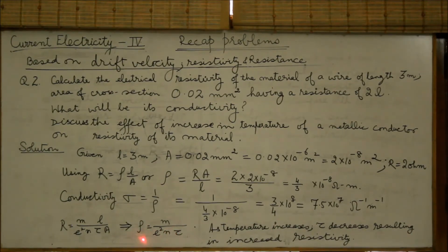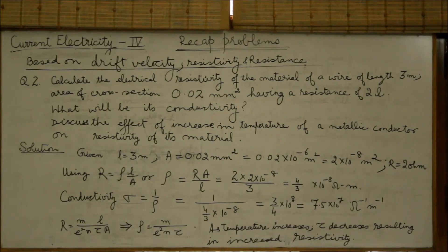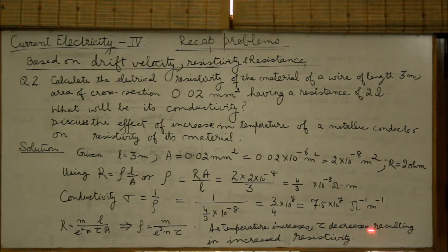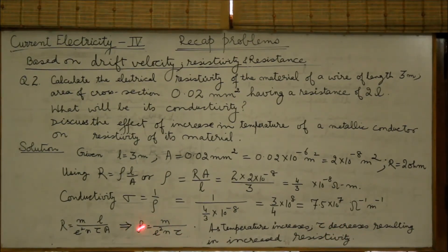The factor affecting rho is tau, the relaxation time, or the average time between two collisions of the free electrons. As temperature increases, the random motion of the electrons increases. They move faster, collide more frequently, resulting in a decrease in tau. Hence, the resistivity will show an increase.